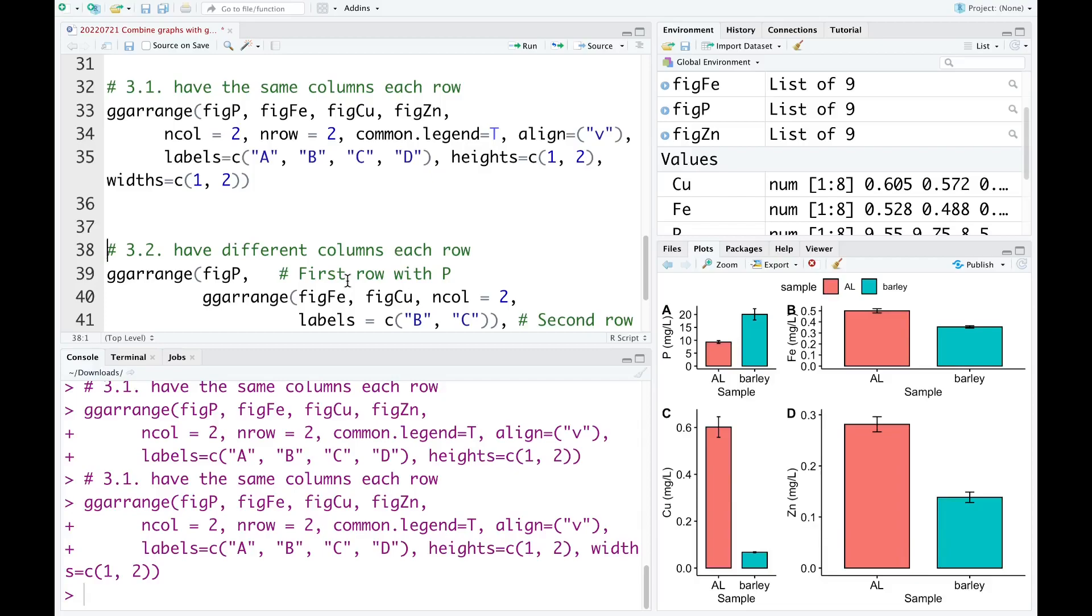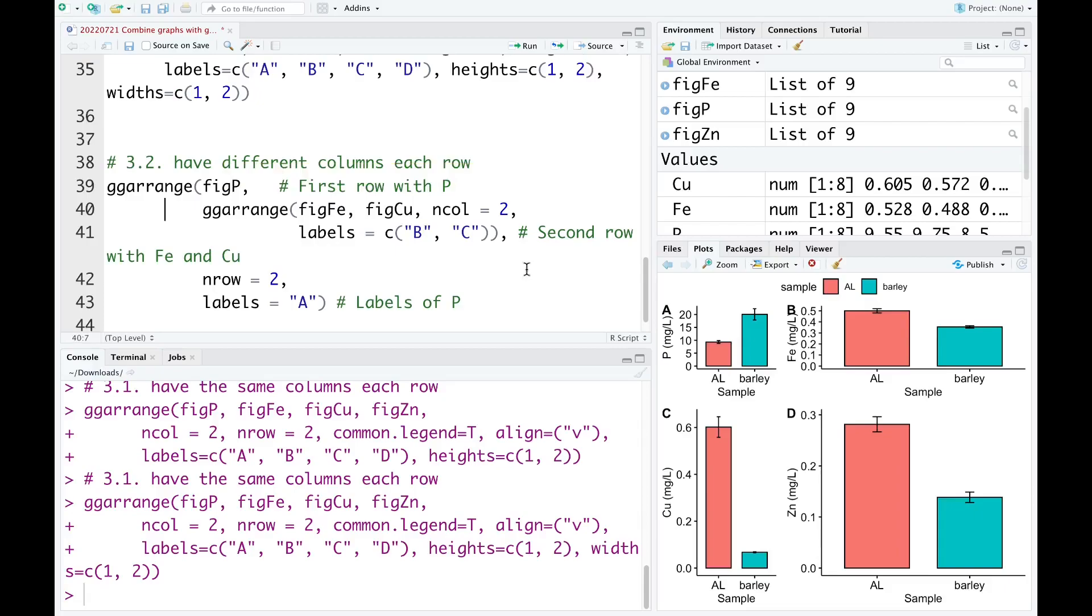Sometimes when you combine graphs, you want the first row to have only one figure and the second row to have two figures. So how can we do that? For example, in this case, we just want to plot only three figures in one: phosphorus, iron, and copper. And we want phosphorus in the first row and iron and copper in the second row.